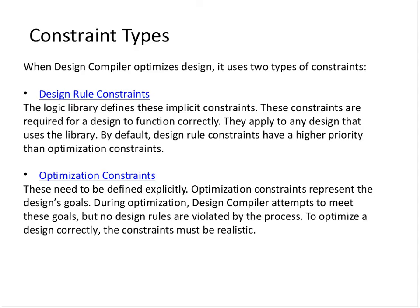These constraints must be met to ensure the design functions correctly. Any design that uses a library will inherit these constraints, and by default they have higher priority over optimization constraints. The second group is optimization constraints — these are explicit constraints that must be defined by the user. They represent the design goals: performance or speed, power, and area.